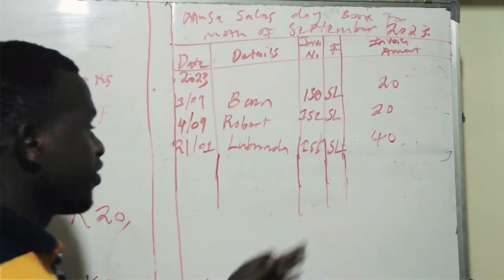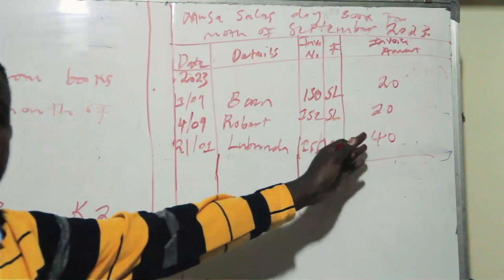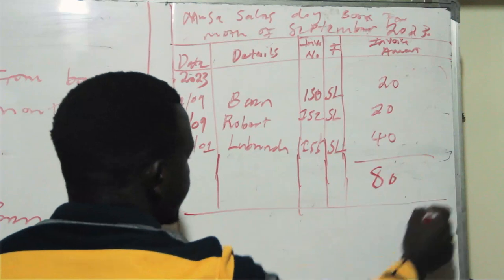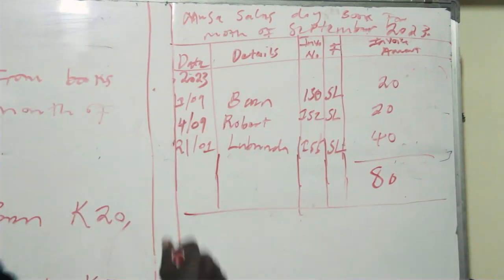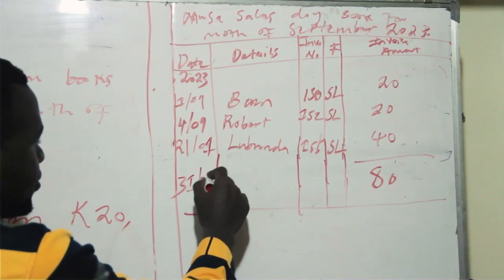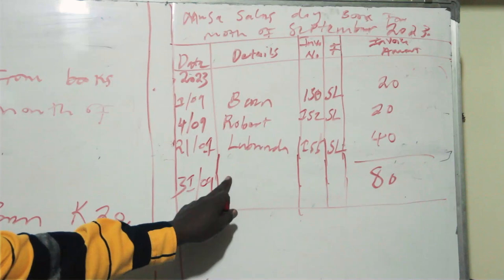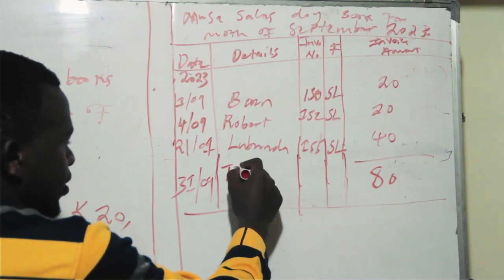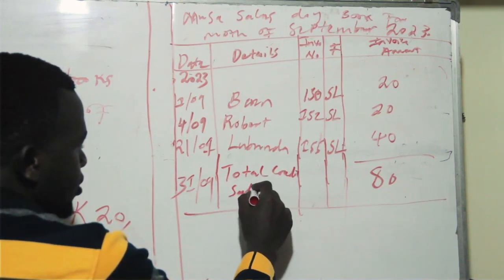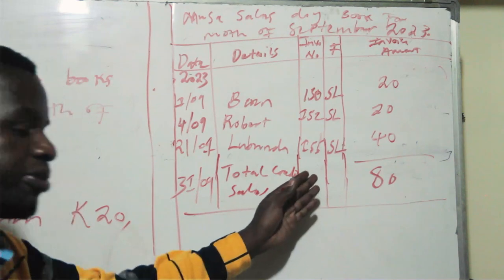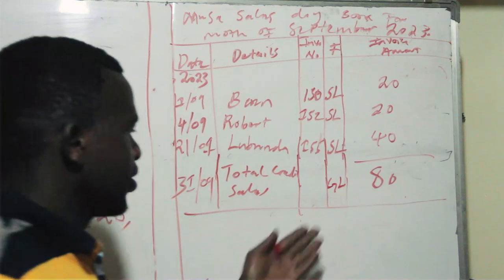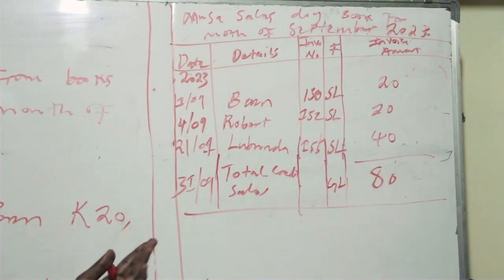Now we find the total: 20 plus 20 plus 40 equals 80. The date is shown at the end of the month, which is the 31st of September. In the details we write 'total credit sales,' and this amount has to be shown in the general ledger, so we put GL.